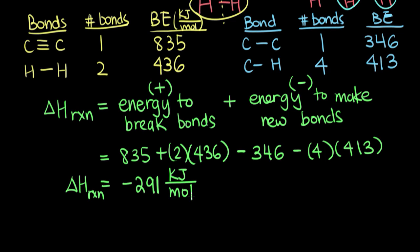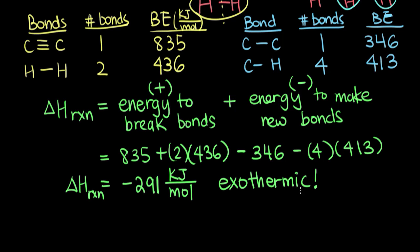We can see that this overall reaction releases energy because delta H is negative, so it's exothermic. And that's how you can use bond enthalpies to calculate delta H of reaction.